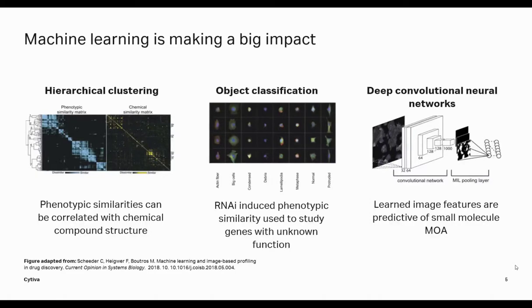What this means is that the chemical structure is very predictive of the phenotype it will generate when put into cells. In the center example, we're looking at a supervised machine learning object classification where researchers set up an RNAi screen to understand the function of certain genes with unknown function. When cells are grouped accurately by phenotype, the functions of the genes that drive those phenotypes cluster together — meaning you can use this phenotypic readout to infer something about a gene with an unknown function. All of this only works because of the ability to use all the content in an image to describe the phenotype.